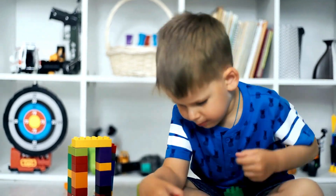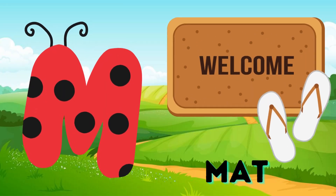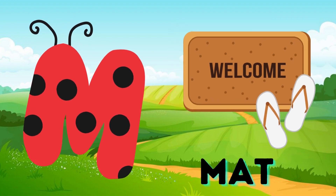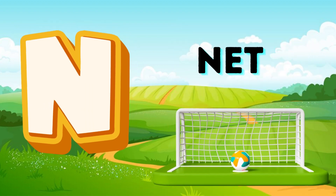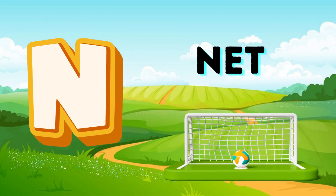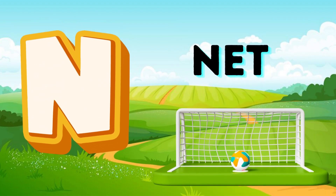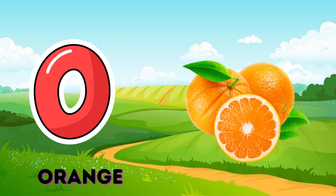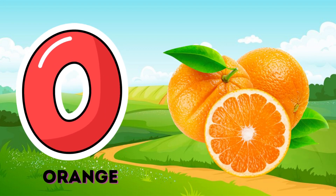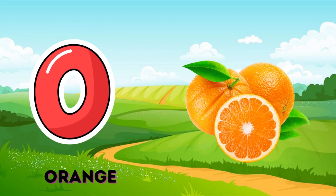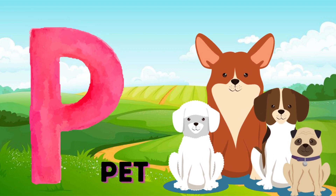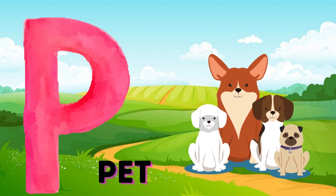M is for Mat. M-M-Mat. N is for Net. N-N-Net. O is for Orange. O-O-Orange. P is for Pet. P-P-Pet.